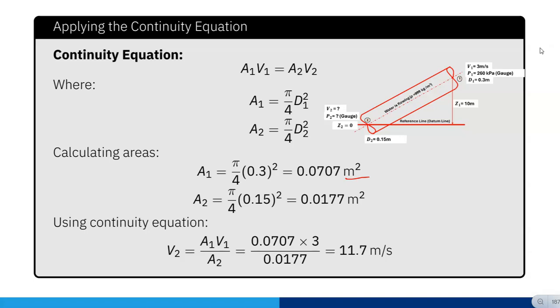0.0177 meter squared. Now using continuity equation, v2 equals A1 V1 divided by A2. So 0.0707 times 3 divided by 0.0177 equals 11.7 meter per second. So v2 is 11.7 meter per second.